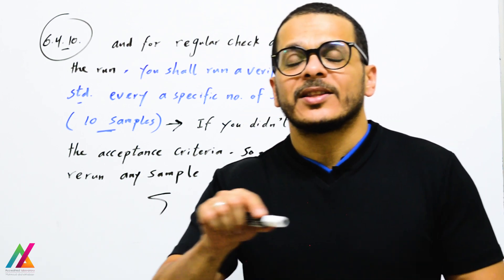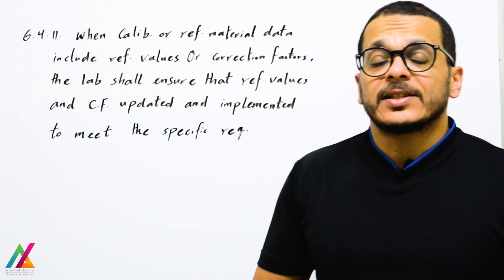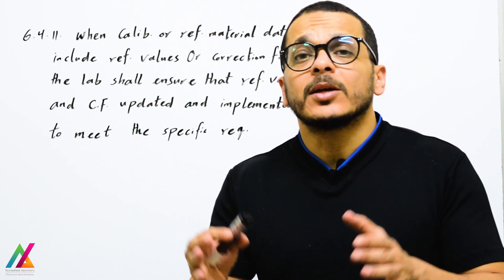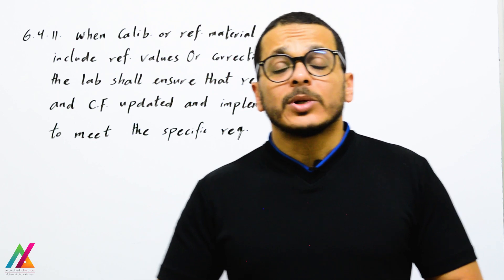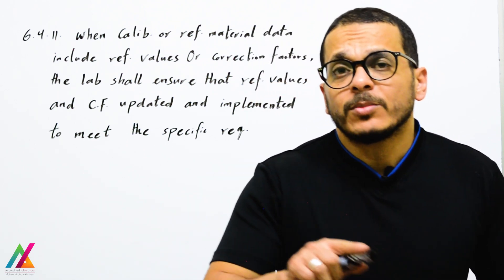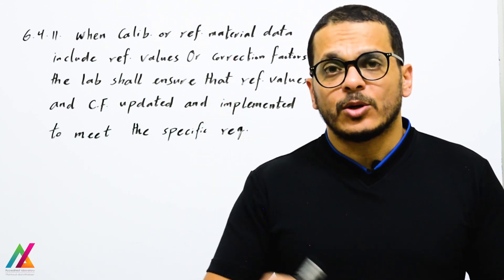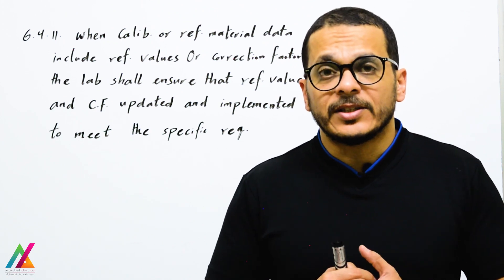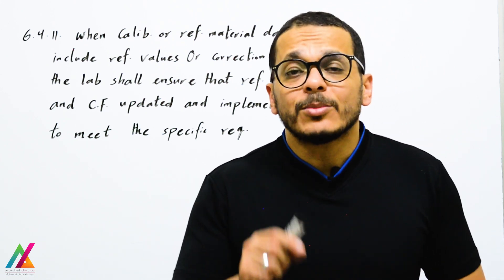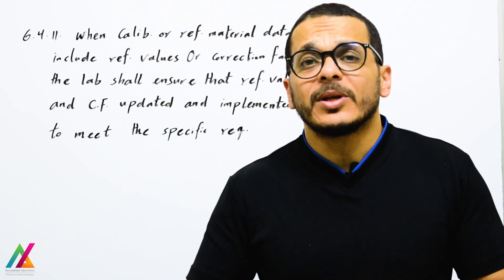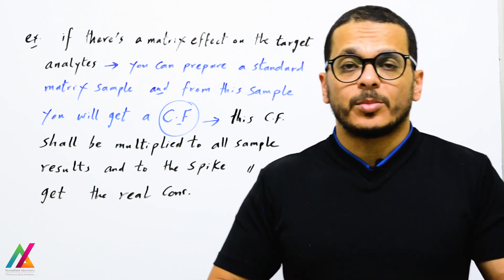When calibration or reference material data include reference values or correction factors, the lab shall ensure these are updated and implemented to meet specified requirements. This point may not apply to all labs, but if you have correction factors to multiply to the final result to get the real concentration, these should ideally be entered into the instrument sequence, or applied in software outside the instrument — but applying them within the instrument itself is preferred to ensure they are consistently applied.